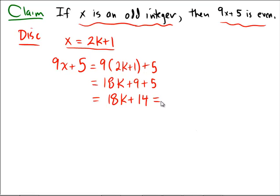Now we hope to show that this 9x plus 5 quantity was actually even, so we hope to show that it's equal to 2 times something. But notice that in this expression, 18 and 14 both have a common 2. So I can factor out a 2 and say that this is equal to 2 times 9k plus 7.